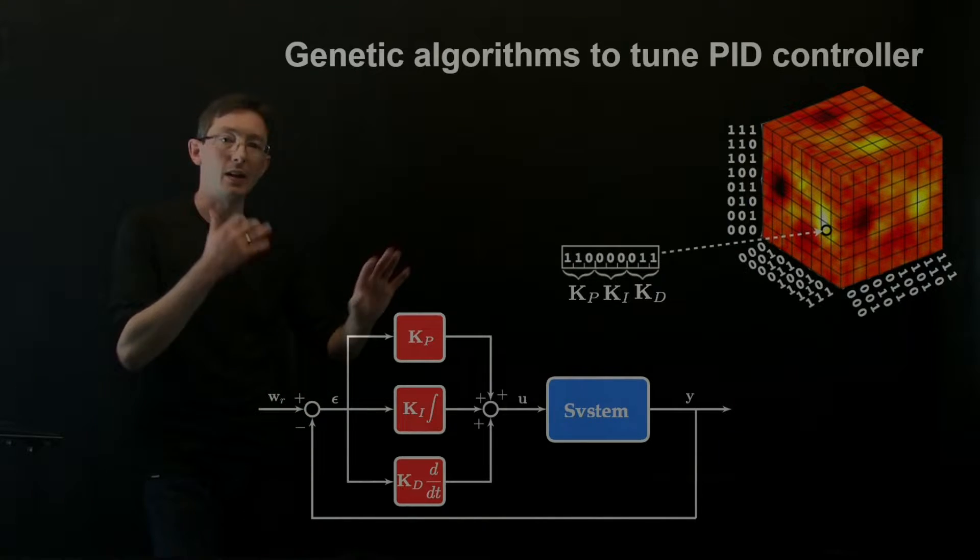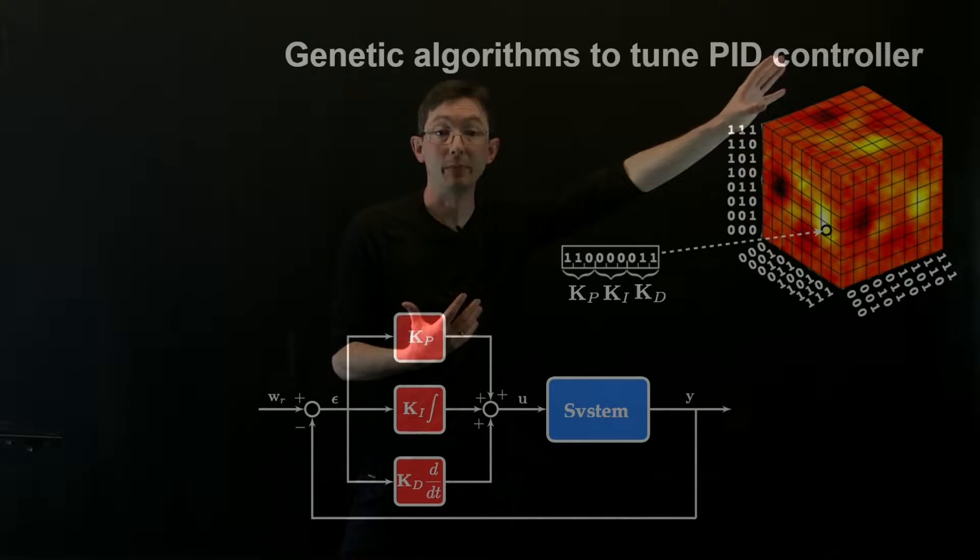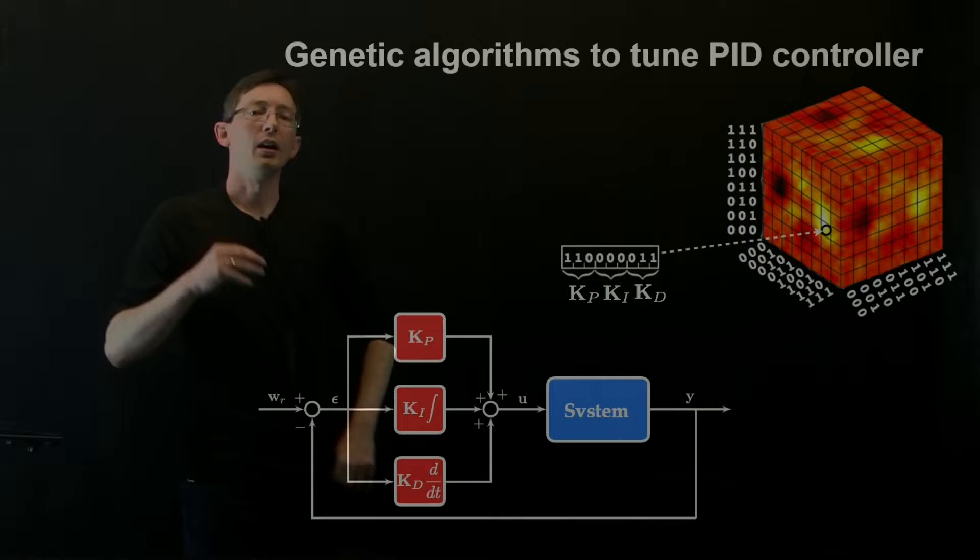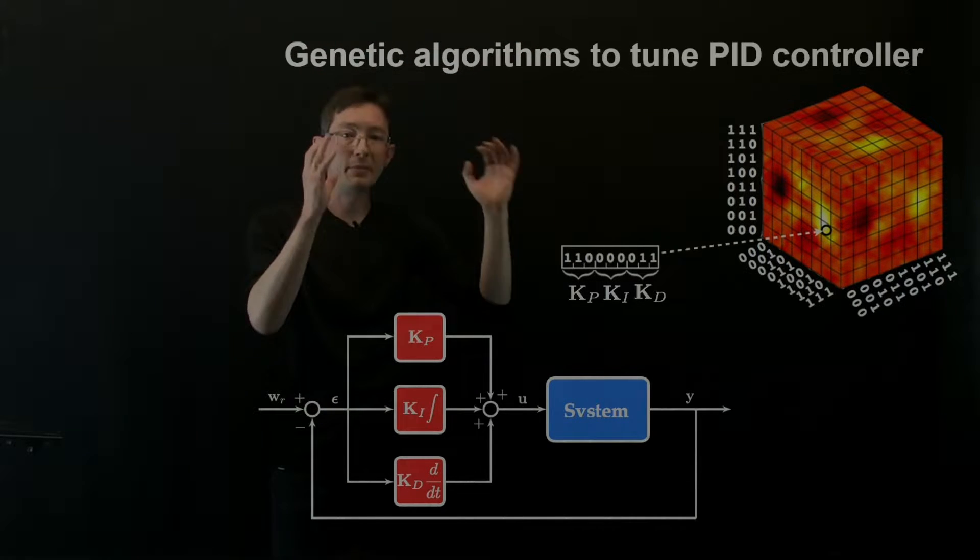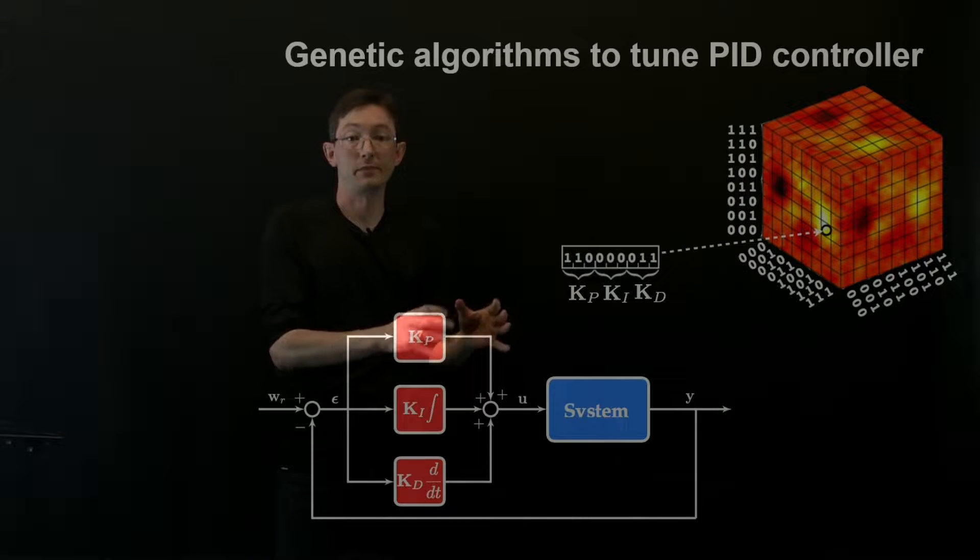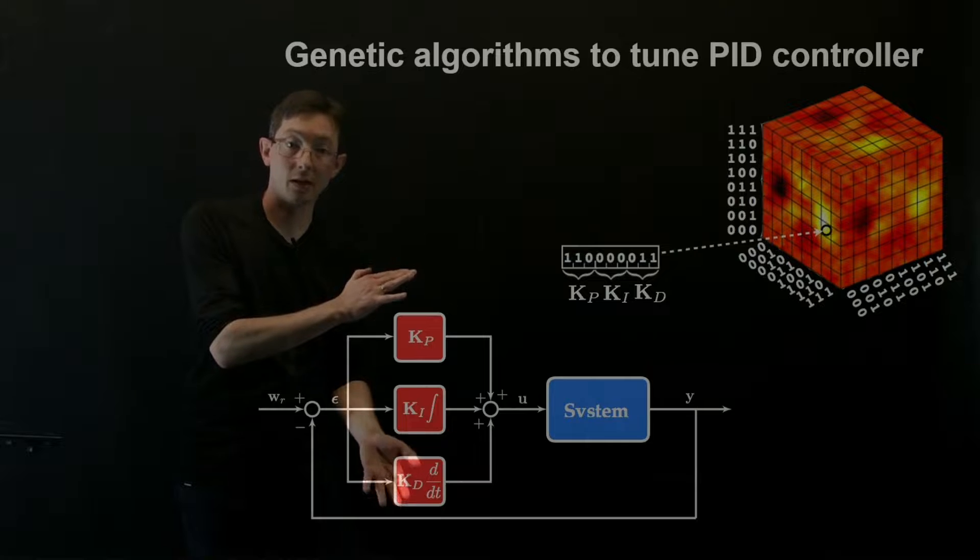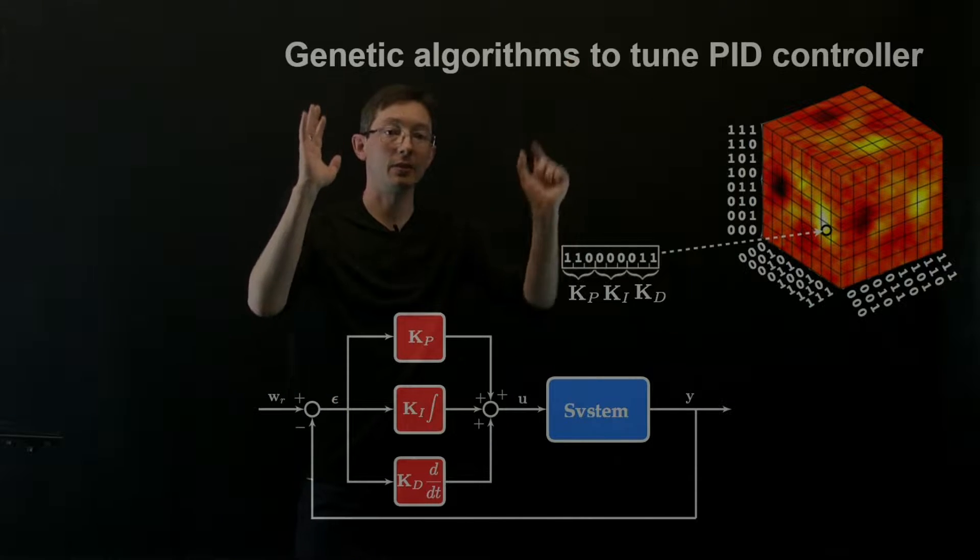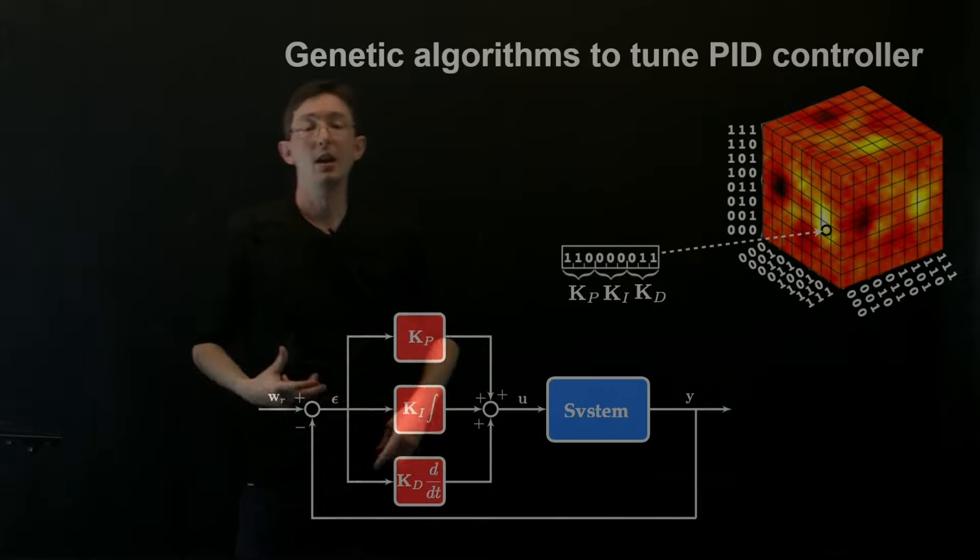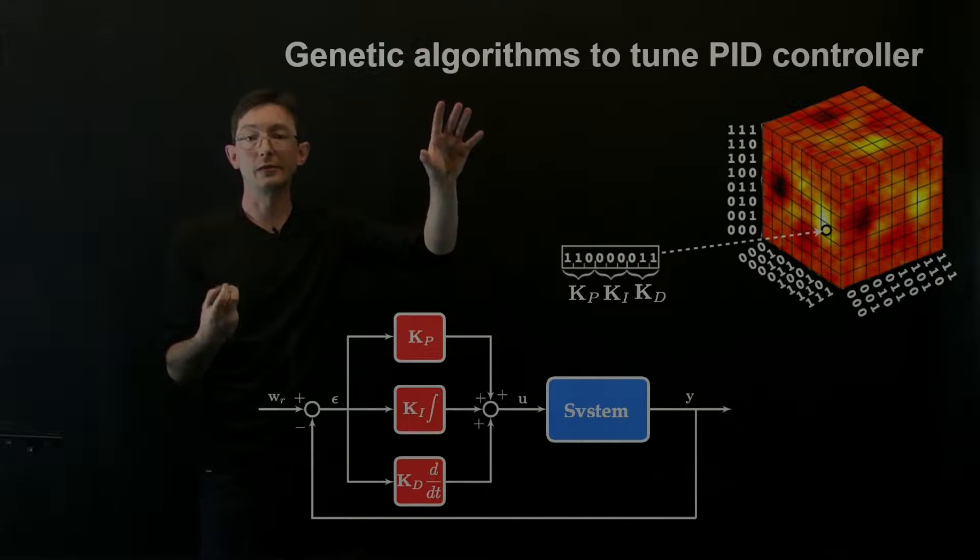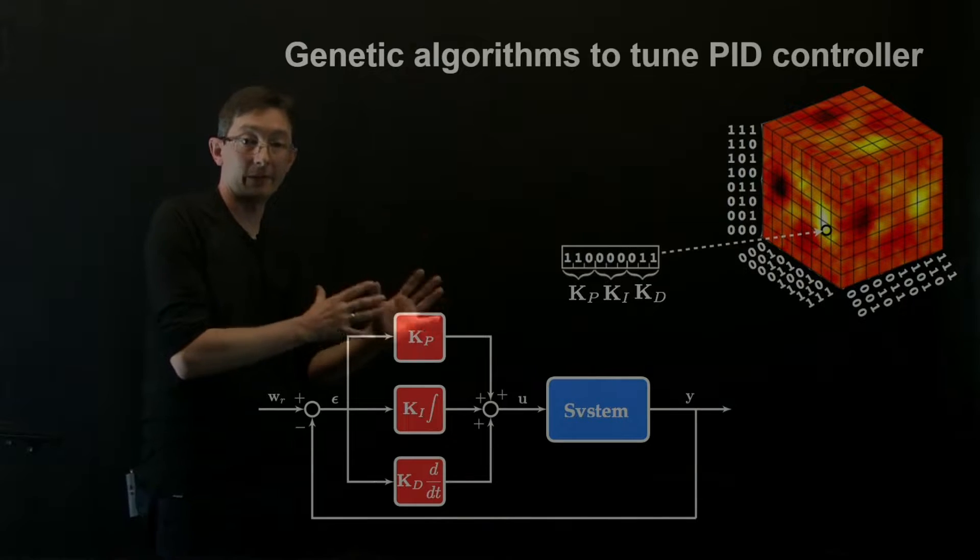In the last few videos, we've talked about how to use genetic algorithms, what they are, and how to use them to tune a PID control law. In general, I want us to be thinking genetic algorithms optimize the parameters of known structures. So for example, I lock in that I'm going to use a PID control law, then I can use a genetic algorithm to tune the parameters of that known structure. And so genetic algorithms are very useful for parameter identification when you have a fixed structure.